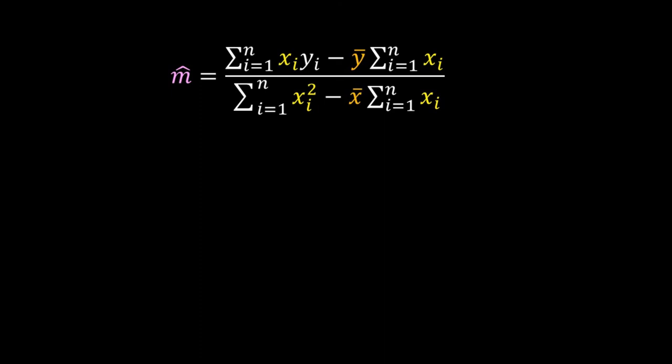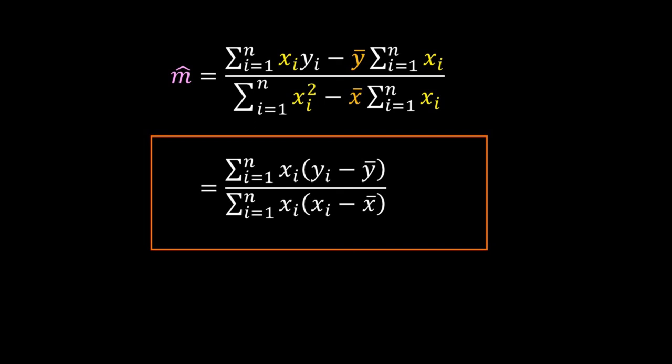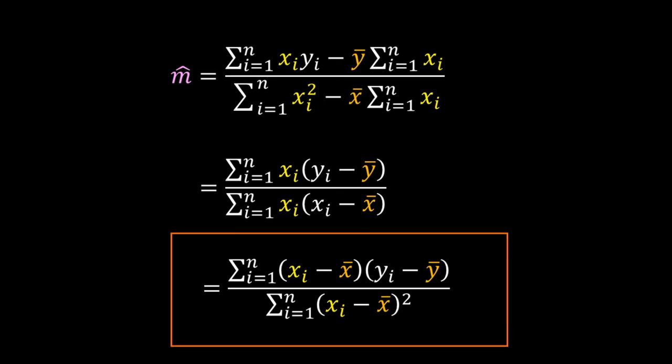This does not look familiar, but rearranging the terms gives m̂ = Σxi·(yi − ȳ) / Σxi·(xi − x̄), which is the same result from our last video on linear regression. With some further rearrangement, we get m̂ = Σ(xi − x̄)(yi − ȳ) / Σ(xi − x̄)², the conventional equation for the least squares estimate of the slope of the best fit line.